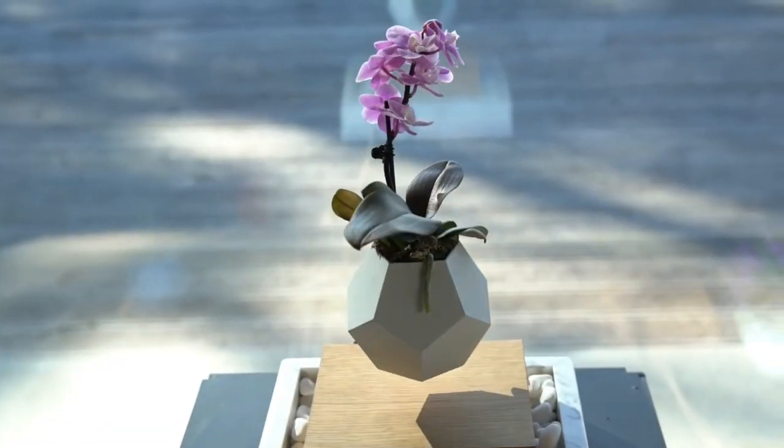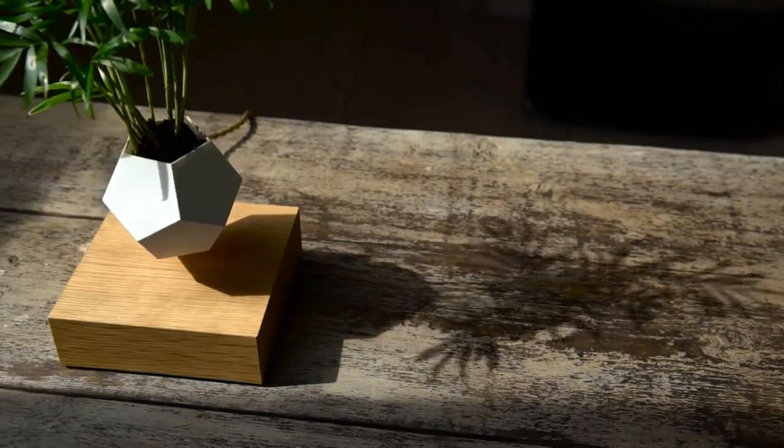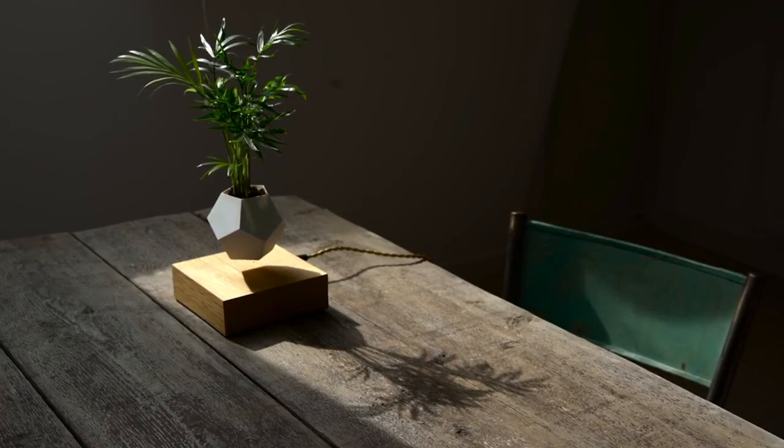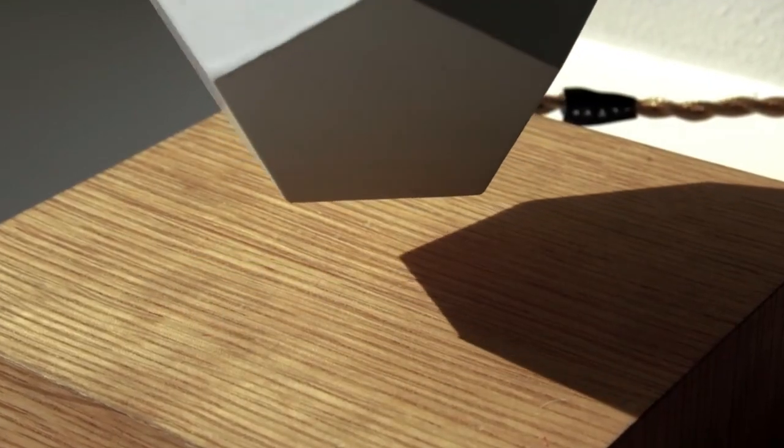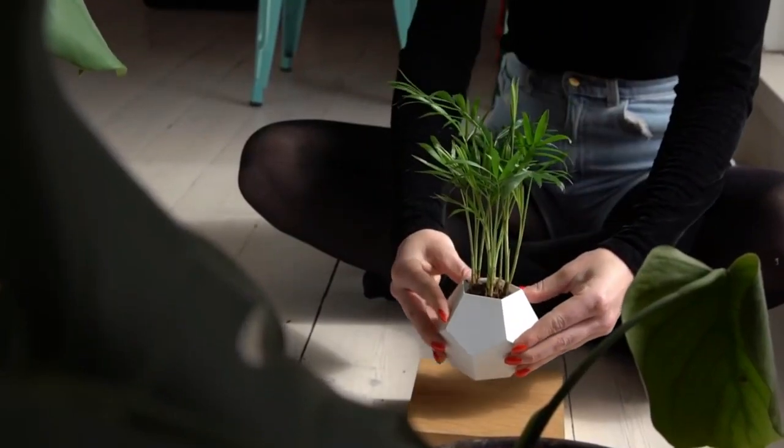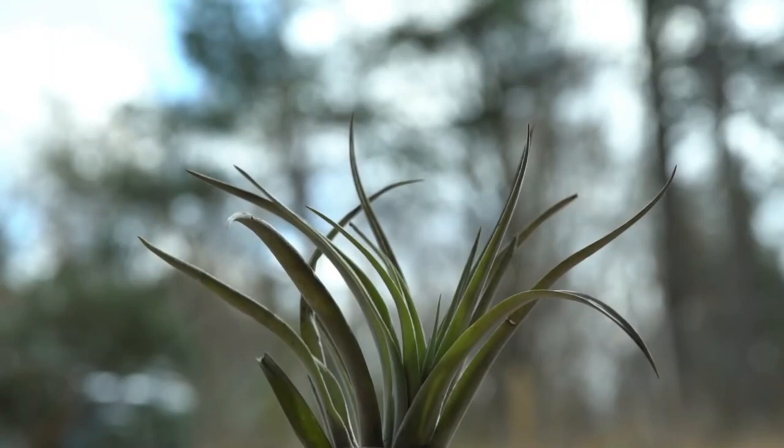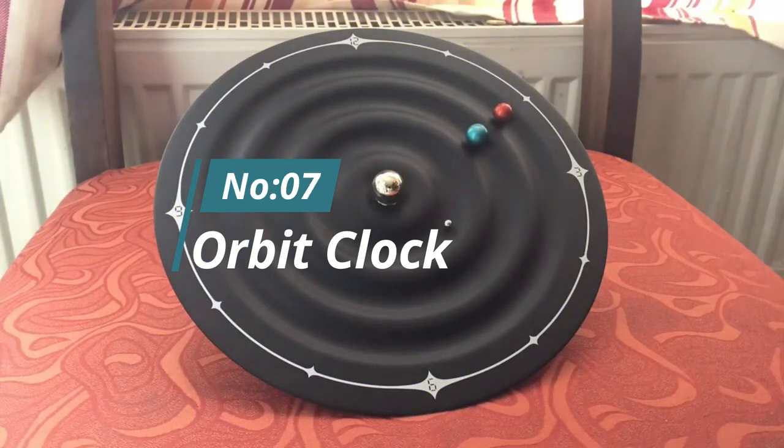You've got three marbles representing different worlds as they move at different speeds, and obviously there's a big sun in the middle. Now, telling time at a glance isn't fairly obvious at first, but it's actually much simpler than it looks. The farthest planet represents the minute hand. The one in the middle tells the hour, and of course, the little moonlight ball is for seconds. Number 7. Orbit Clock.